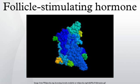Follicle-stimulating hormone is a hormone found in humans and other animals. It is synthesized and secreted by gonadotrophs of the anterior pituitary gland. FSH regulates the development, growth, pubertal maturation, and reproductive processes of the body. FSH and luteinizing hormone act synergistically in reproduction.